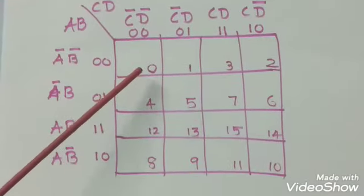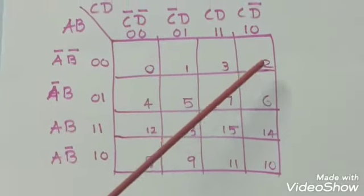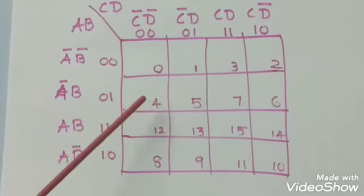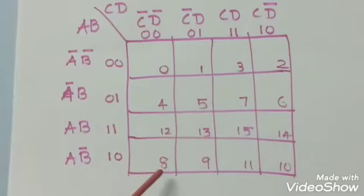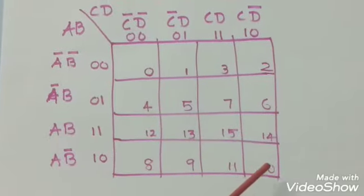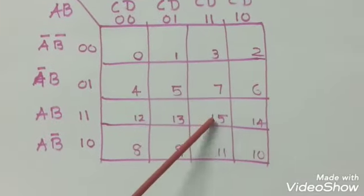Write the numbers in each square as 0, 1, 2, 3, 4, 5, 6, 7, 8, 9, 10, 11, 12, 13, 14, 15.